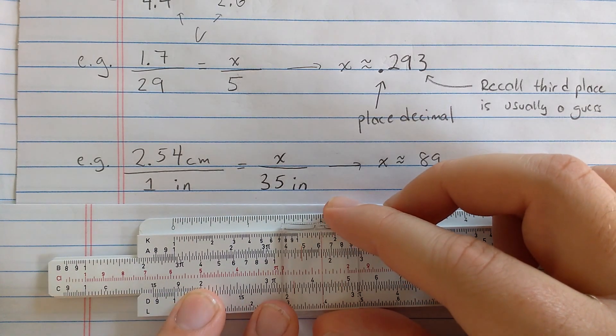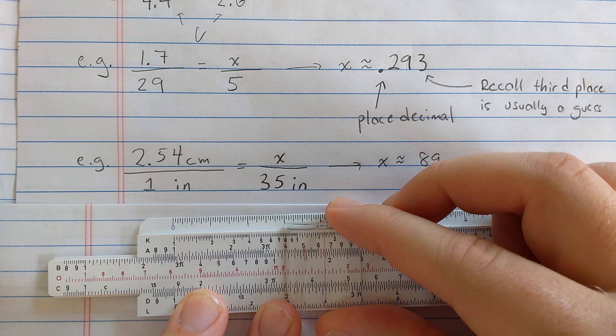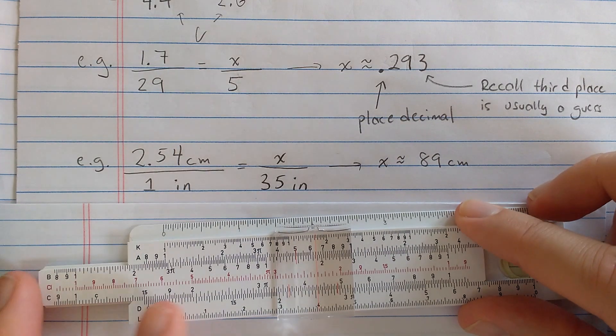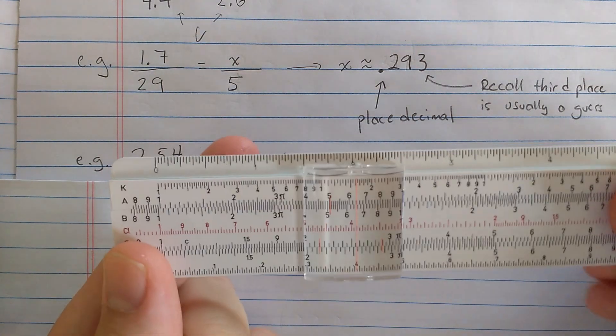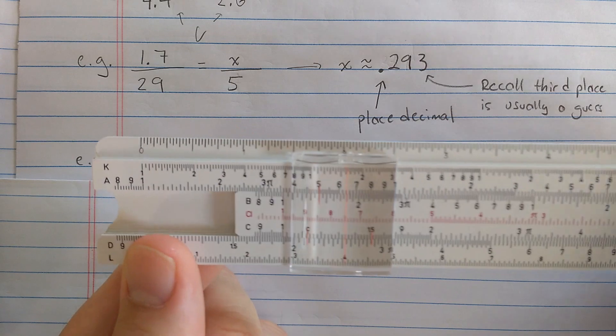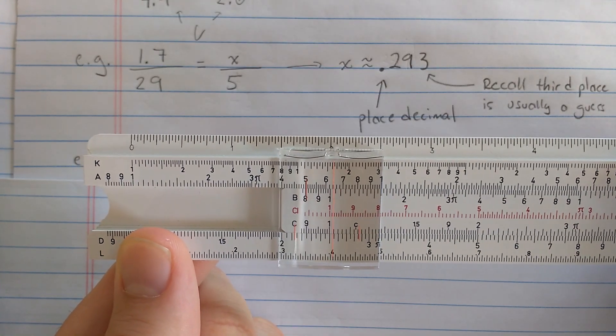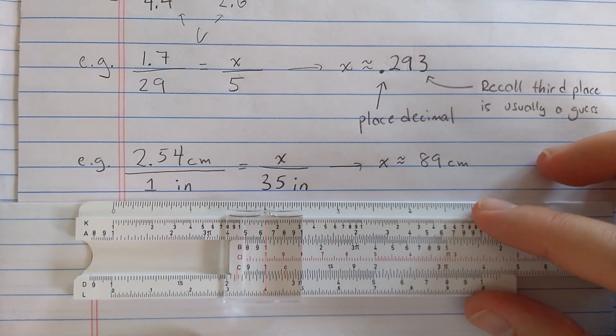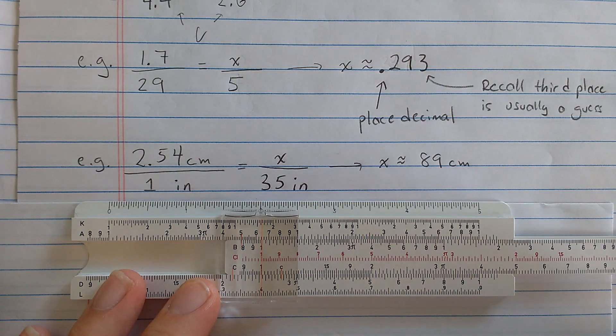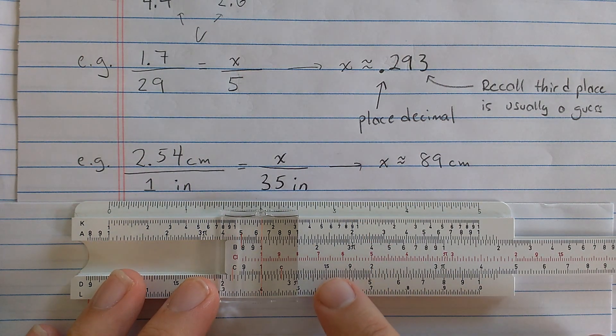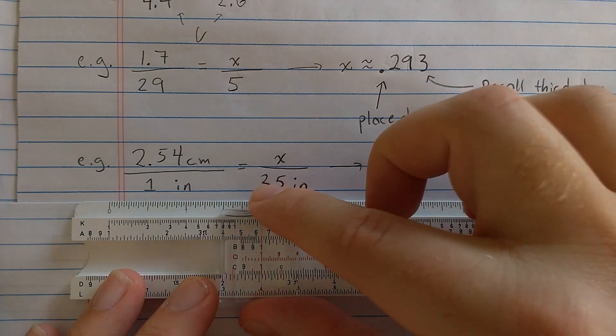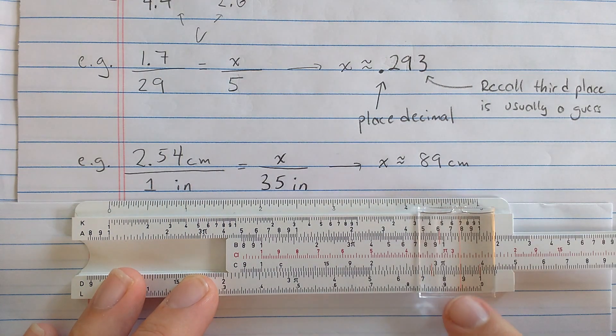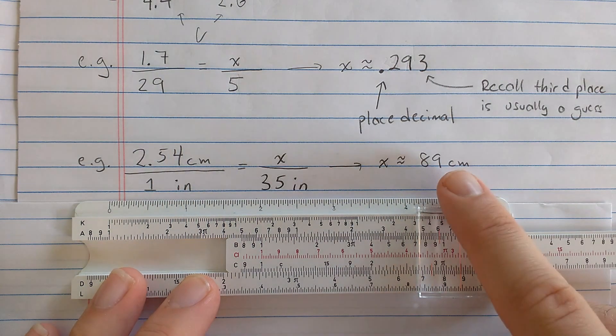I'll first find the 2.54. So here's 2.5. This will be 2.55, so I'll take it back a hair. Hopefully that's good enough for 2.54. Then, 2.54 to 1, so I'll find 1 on the C scale, is something over 35, or I'll use 3.5. So what do I need to do? I need to find the 3.5, it's down here. And then that something is on the D scale, about 8.9. And again, this should be 89.